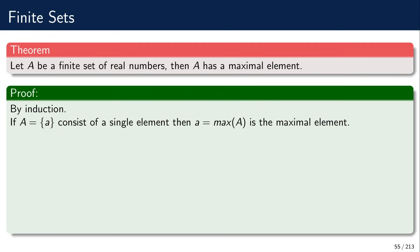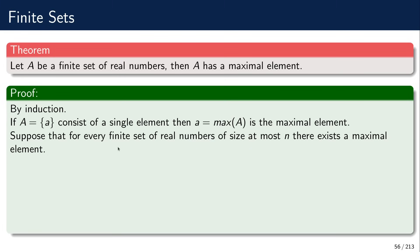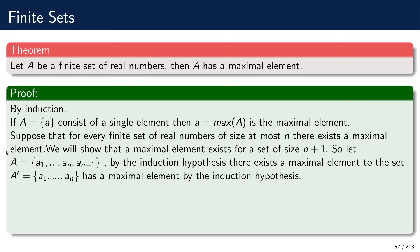When we say maximal element, this means it is an element of the set itself. So when we have a set of one element, this element belongs to the set and is in fact the maximal element and also the minimal element. Now here is the induction hypothesis: we suppose that for every finite set of real numbers of size at most n, there exists a maximal element. Then we need to prove it for a set of size n plus 1. So let us choose the set A which consists of n plus 1 elements, which we can label a1 up to a_{n+1}. By the induction hypothesis, if we look at this subset of n elements — call it A prime — then this set has a maximal element.